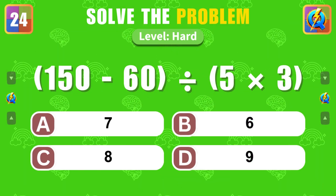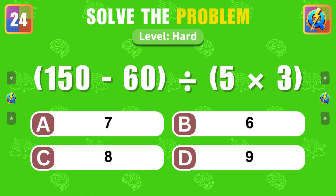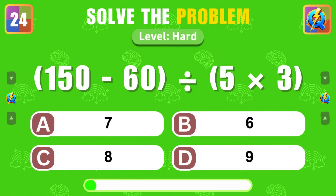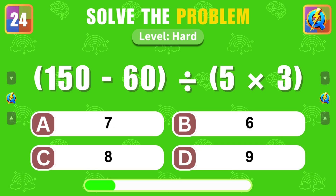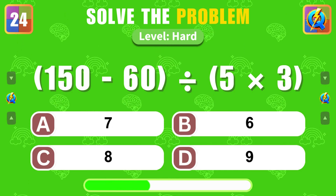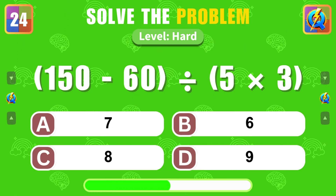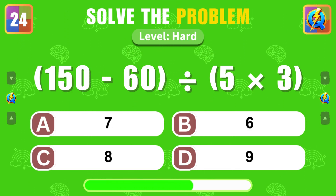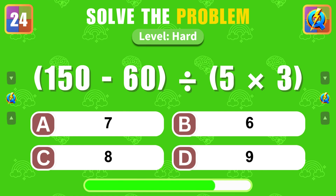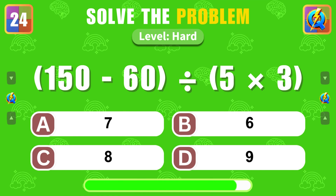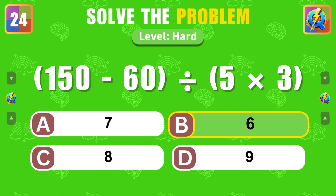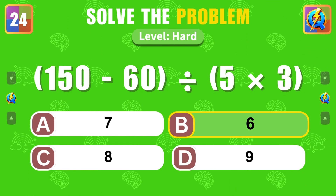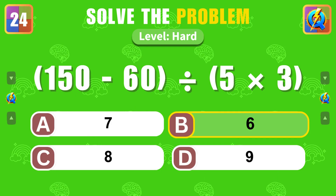What is the result of 150 minus 60 divided by 5 times 3? Spot on, the answer is 6.